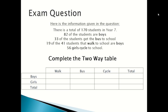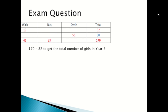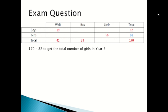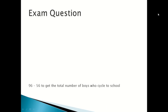Complete the two-way table — but this time the table is blank. First, put in the already known values. Next, do 170 minus 82 to get the number of girls, which is 88. Then do 170 minus (41 plus 33) to get the total number of students who cycle to school, which is 96.